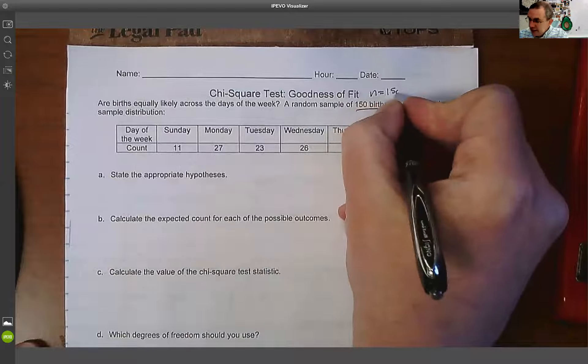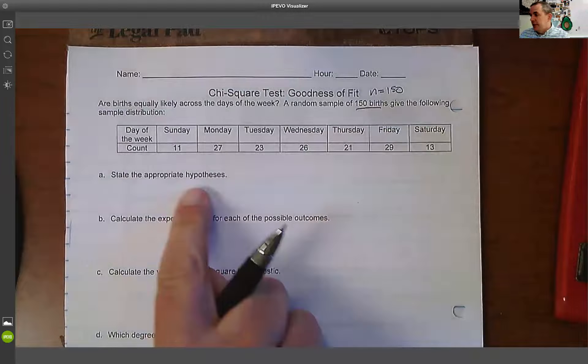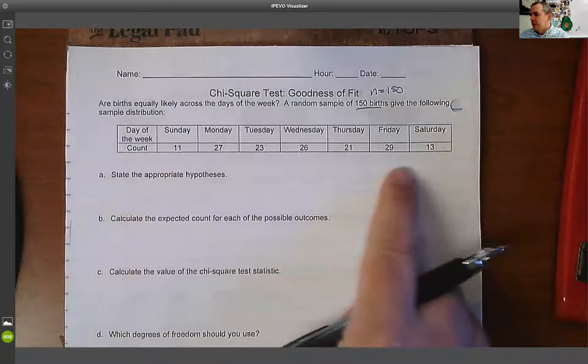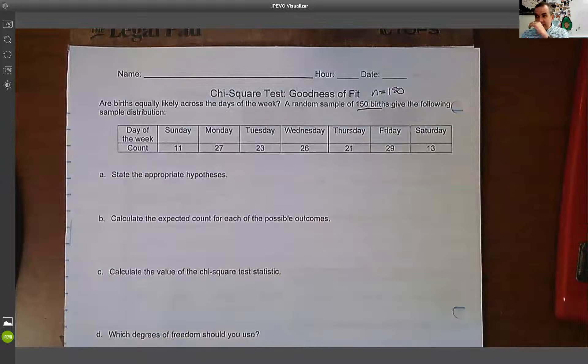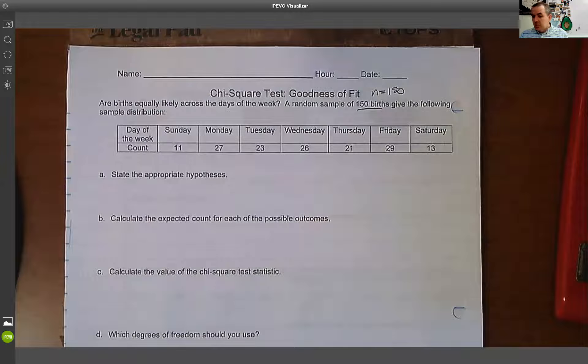And what we're looking at here is we're taking a look at the distribution by days. So we got the seven days and the number of births per day. So if we do a quick scan of that, there looks to be some difference, but we're not sure.